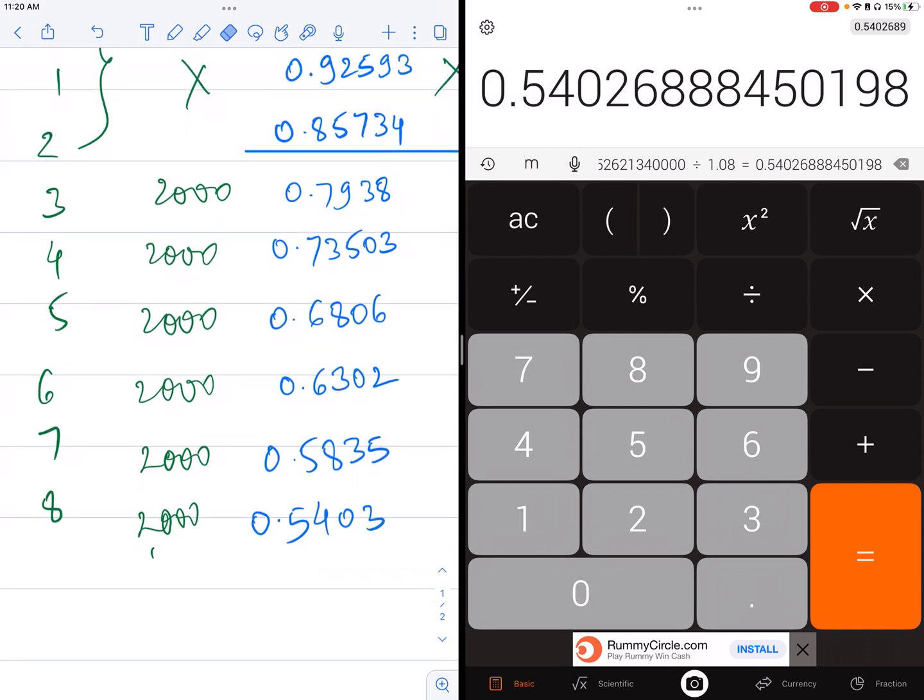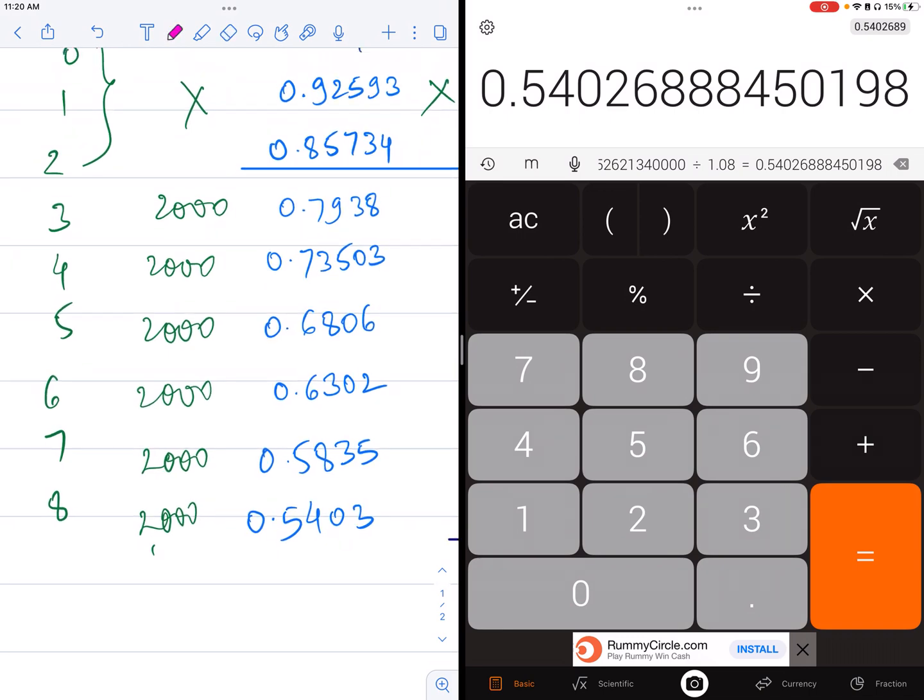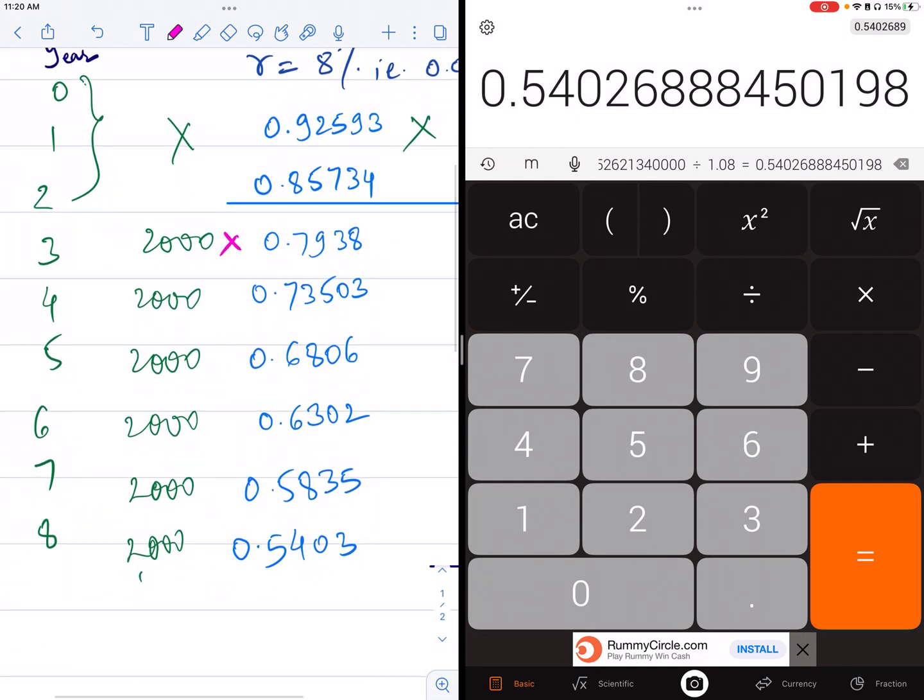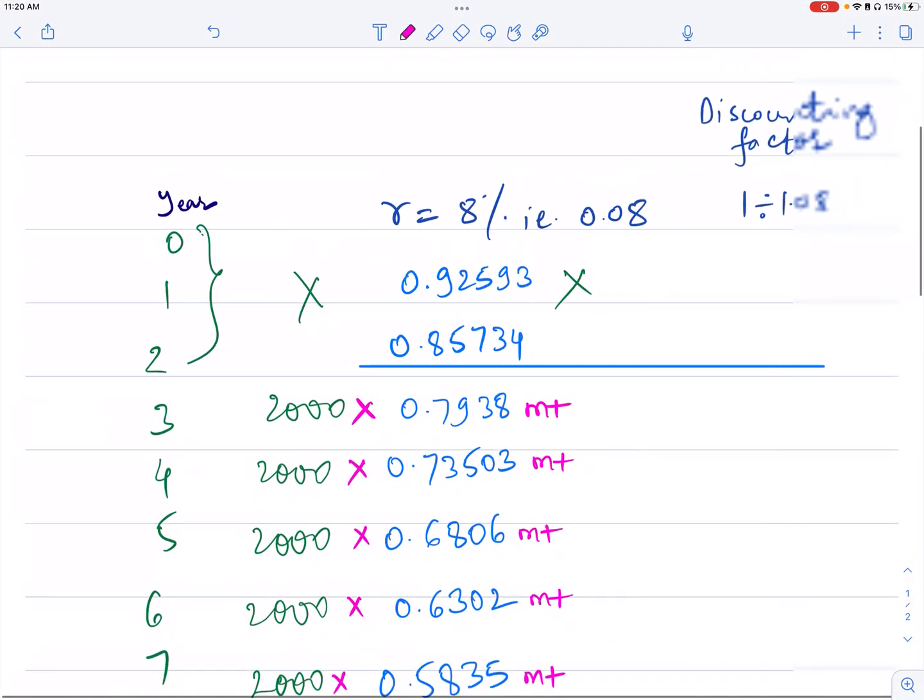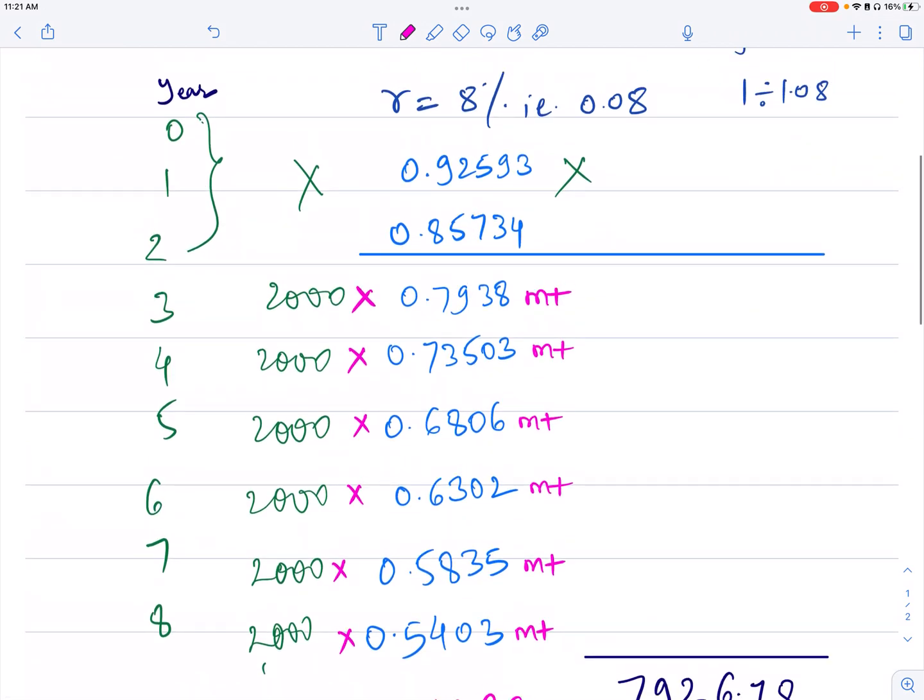So basically, we're taking the present value of these Rs. 2000 at the rate of eight percent after each year. You have to do it simply. You have to multiply Rs. 2000 by 0.7938 M plus. Then Rs. 2000 multiplied by 0.73503 M plus. Rs. 2000 into 0.6806 M plus. Rs. 2000 into 0.6302 M plus. Rs. 2000 into 0.5835 M plus and Rs. 2000 into 0.5403 M plus. And ultimately, memory recall. Basically, you're finding the present value of every Rs. 2000 that you're paying at the end of each year at the rate of eight percent.